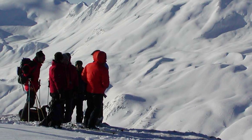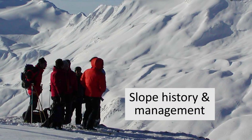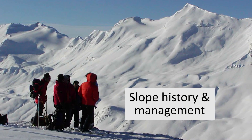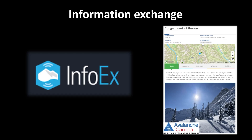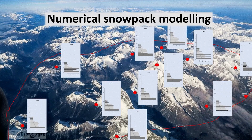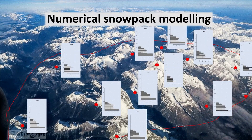People who use the same terrain regularly often pay close attention to where surface hoar forms, as well as the history of traffic on specific slopes, so they can avoid suspect terrain. Sharing observations is helpful to get a larger-scale view of where others have found surface hoar. In Canada, professional reports are shared on the InfoEx, and public reports are shared on Avalanche Canada's Mountain Information Network. Recently, some forecasting operations have been using snowpack evolution models to complement field observations — these models use past weather patterns to predict the snowpack and can help identify general regions and time periods with favourable conditions for surface hoar formation.